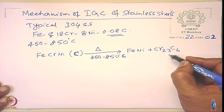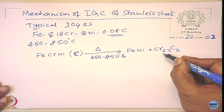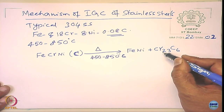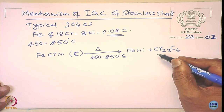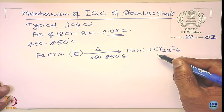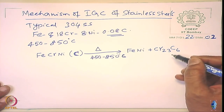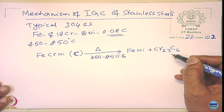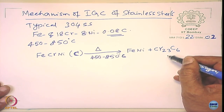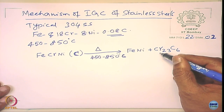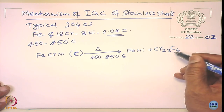Why does chromium carbide form over iron carbide or nickel carbide? Because the affinity is more — the free energy change for chromium carbide formation is very negative. So the free energy change is so negative that it forms preferentially as chromium carbides, and when this forms, the matrix is depleted of chromium.